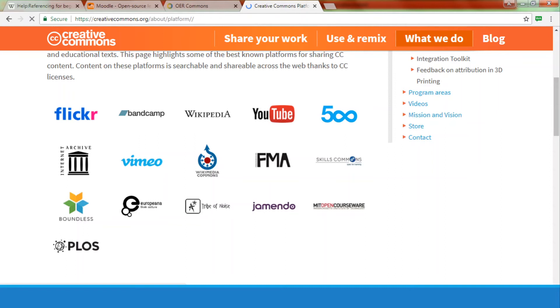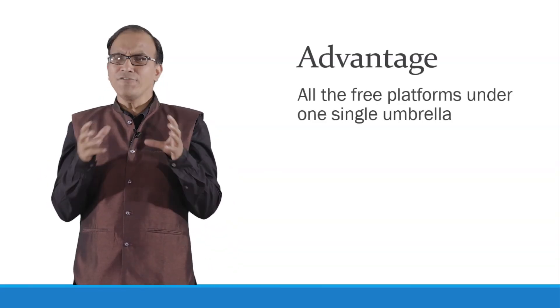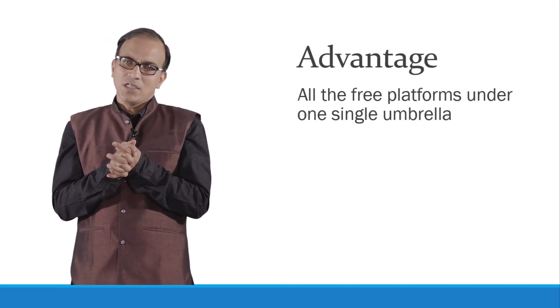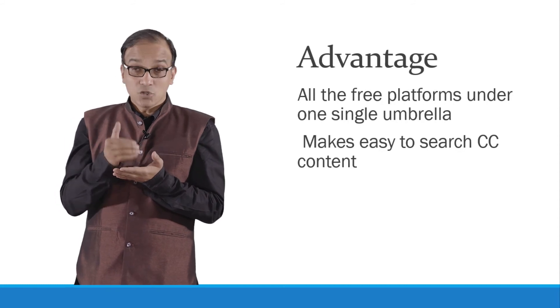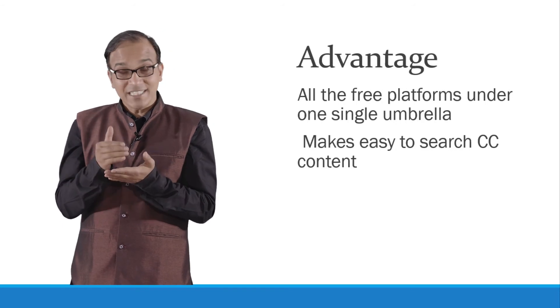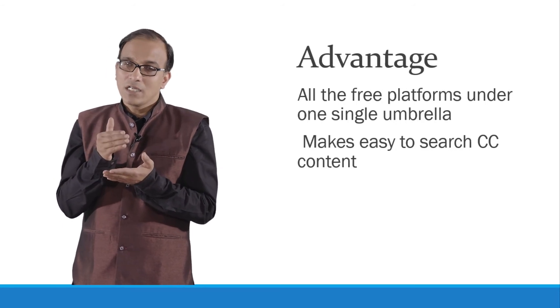As you can see on the website, so many available features and platforms are linked there, which you can use freely — like Flickr, Bandcamp, Wikipedia, YouTube, Vimeo, and others. The advantage is that you can get all the free platforms under one single umbrella, making it easy to search Creative Commons content not covered by a particular copyright.